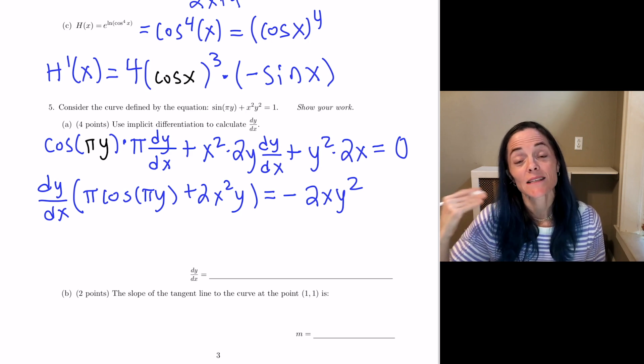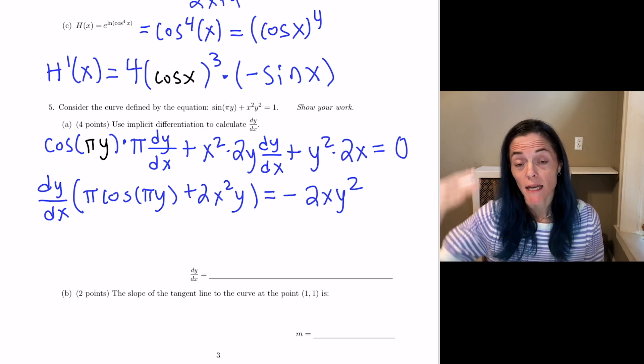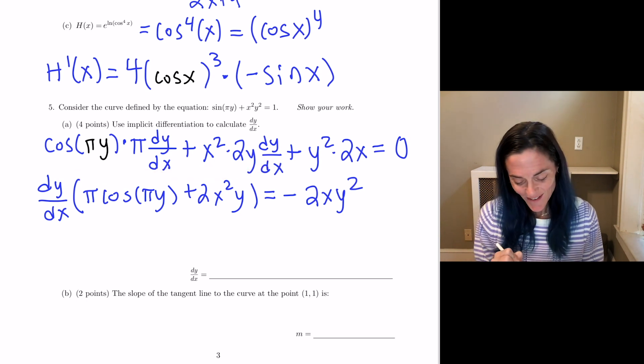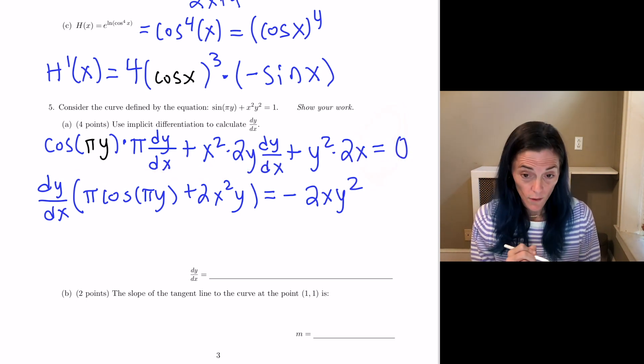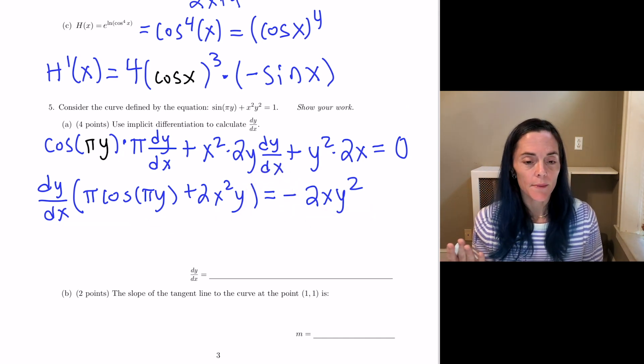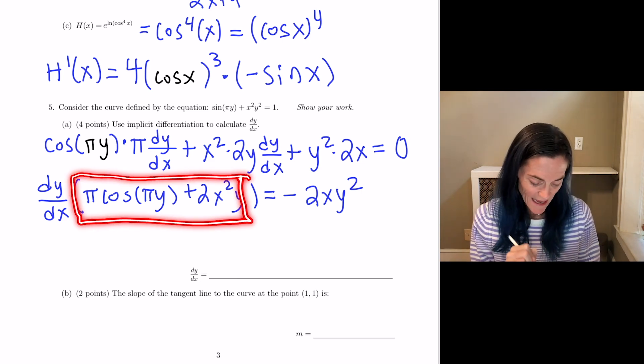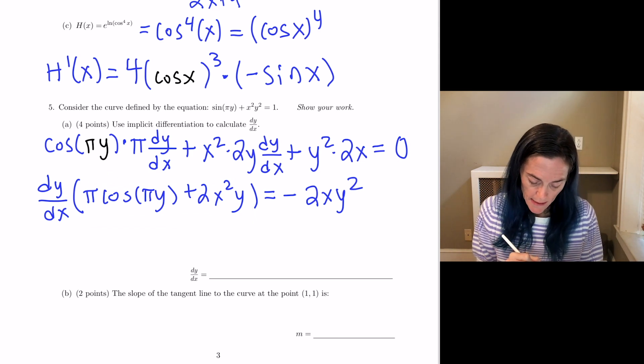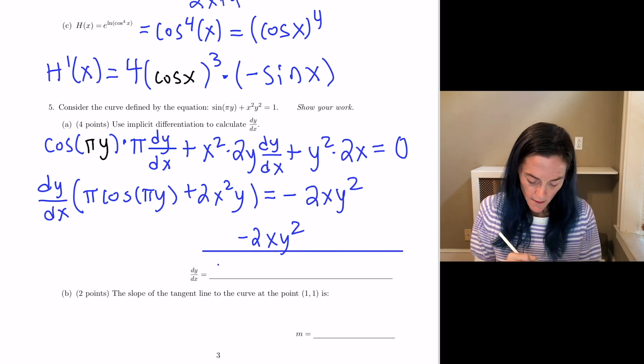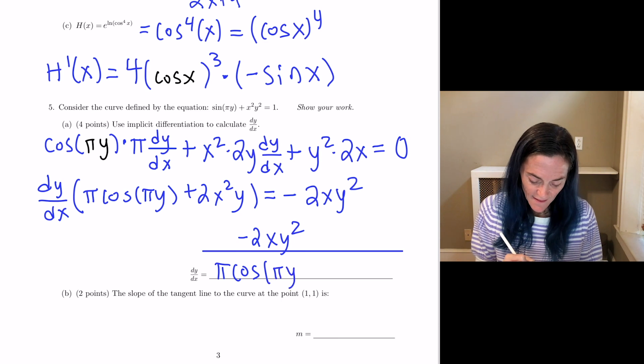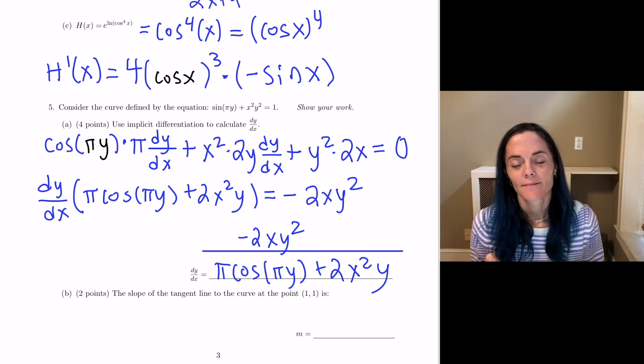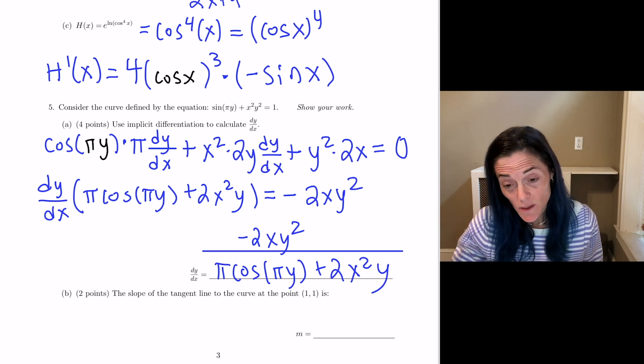Okay, I've said this in class, but this is very important when you're doing implicit differentiation. Every step needs to be an equation, which means at every step you have a left hand side, you have a right hand side, and you have an equal sign. And you notice I have this here, left hand side, right hand side, equals sign. Wonderful. Well, my last step in solving for dy dx is to divide by all of this. So, dy dx is minus 2xy squared divided by, we have pi cosine pi y plus 2x squared y.